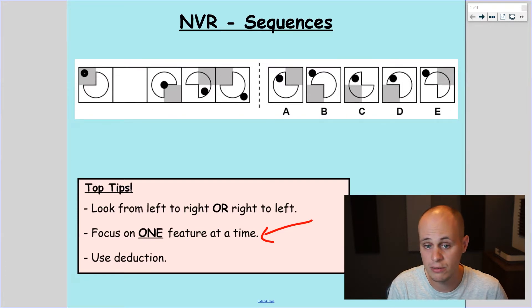So we've got three features here. We've got the dot, we've got the gray square, and we've got the kind of three-quarter circle Pac-Man-y looking thing. So let's focus firstly then perhaps on the dot.